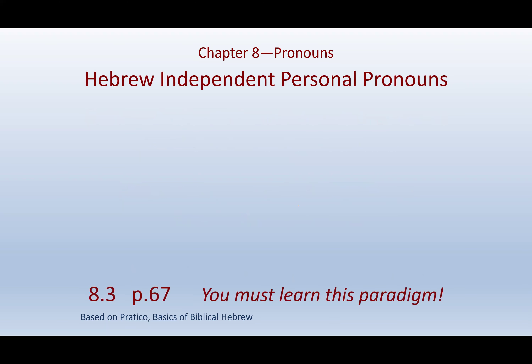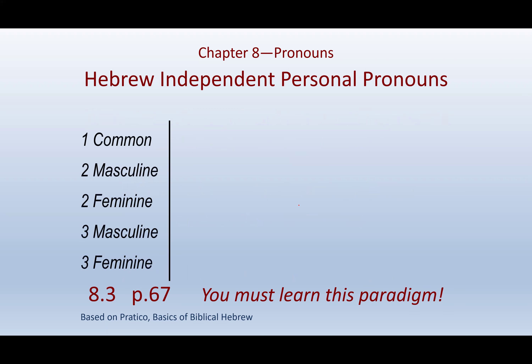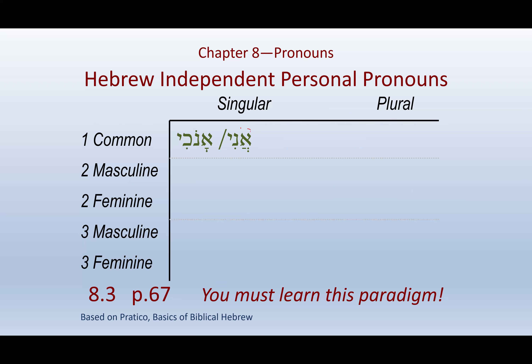Hebrew independent personal pronouns — you need to learn this paradigm, it's on page 67, section 8.3. We have singular and plural, first, second, and third person. For second and third person, we have masculine and feminine. The first person is common — Ani is the most common form meaning 'I.' Whether a man or woman refers to themselves, they say Ani — it doesn't indicate gender. Anochi is another version, but Ani is more common. That's the common singular for 'I.'